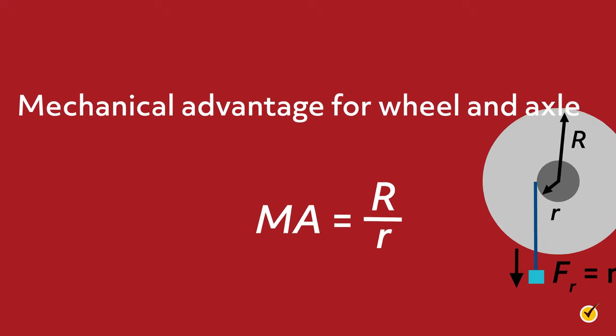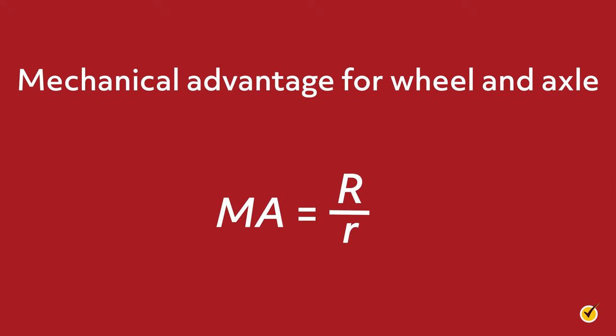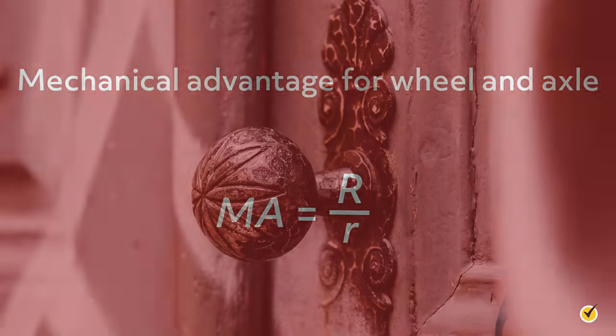This equation gives us an idea of how advantageous the system is or how well it performs. As we can see from the ratio, the bigger the size difference between the two radii, the better it works. So for a larger wheel, we would need to provide less force to move it, but over a longer distance because of its larger radius. This may be a little confusing, so let's look at some examples.